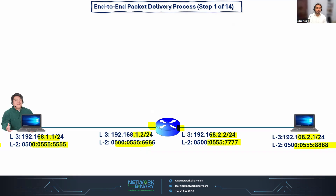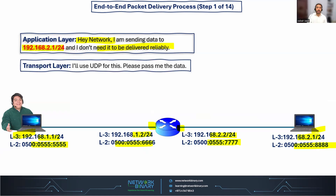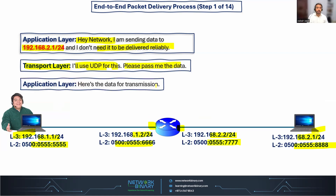When this user wants to send data to receiver 2.1, the user first contacts the application layer. The application layer says: I have some data, I'm sending it to IP address 2.1, and I don't need reliable communication. At the transport layer, it checks the requirement of the application layer — since this is not reliable connectivity, the transport layer says I'm going to use UDP. UDP never establishes any connection before sending data. The application layer says: here is the data for transmission.